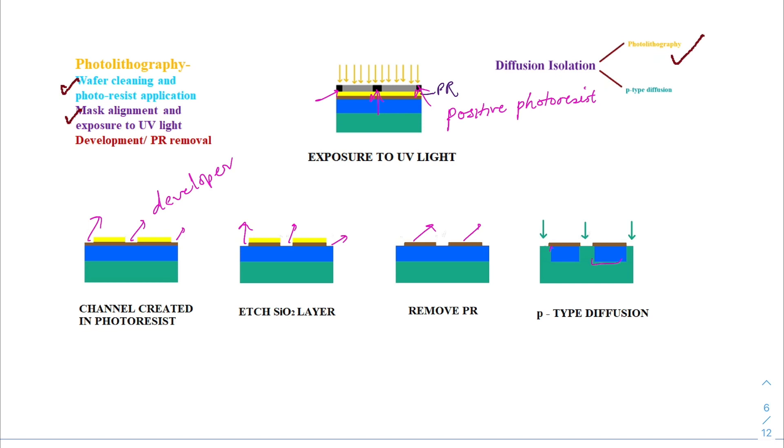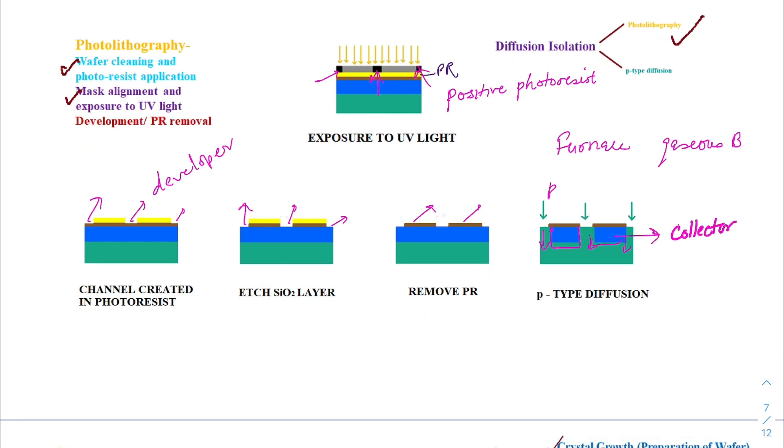The silicon wafer is now placed in a boat and passed through a furnace having atmosphere of gaseous boron, an acceptor impurity. The P impurities will diffuse down to the depth extending to the P substrate. This will result in islands of N type material on the P type substrate under the SiO2 layer. These islands act as collector for an NPN transistor. The P type channels can be written as P plus as these have concentration higher than the P type substrate.